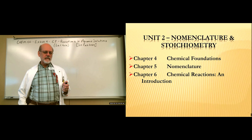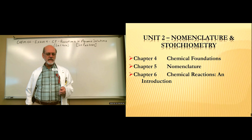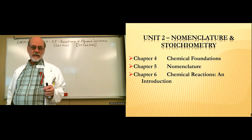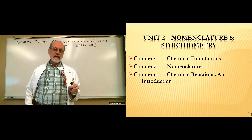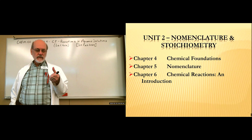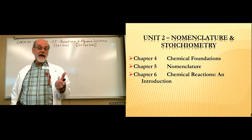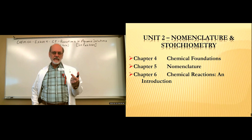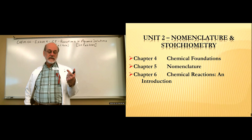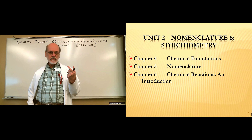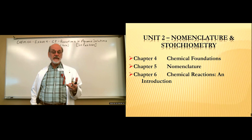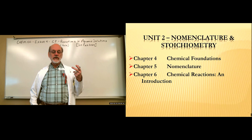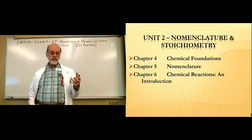Last time we met, we covered Chapter 6, Chemical Reactions, and learned how to balance chemical equations. We talked about the symbols you learn for elements — that's like the alphabet — and then compounds and naming compounds, those are the words. Chemical reactions, the way we set them up, are like sentences, and they describe what's happening when you observe a chemical change.